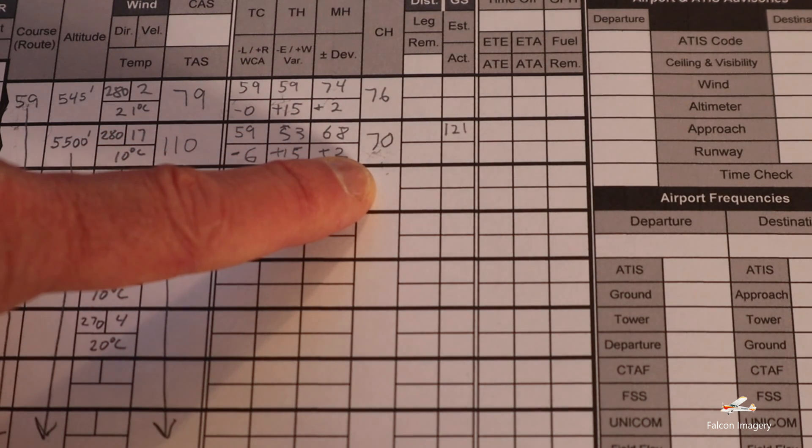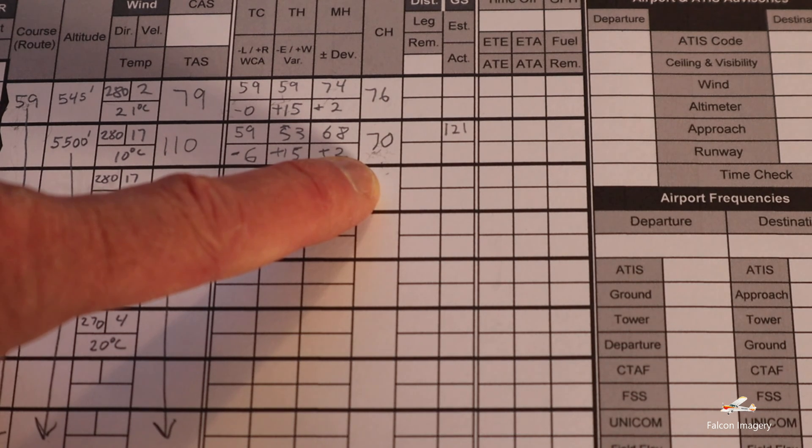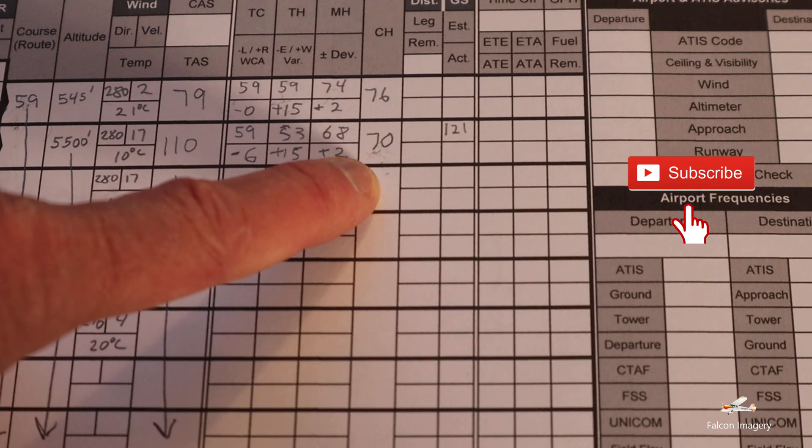And that is the heading, the course heading that we're actually going to fly when in the aircraft, in steering toward Auburn Lewiston. We're going to actually show a 70 in the directional gyro heading indicator as we fly that course.